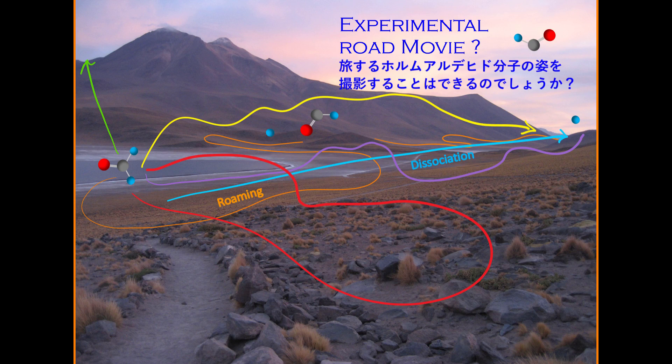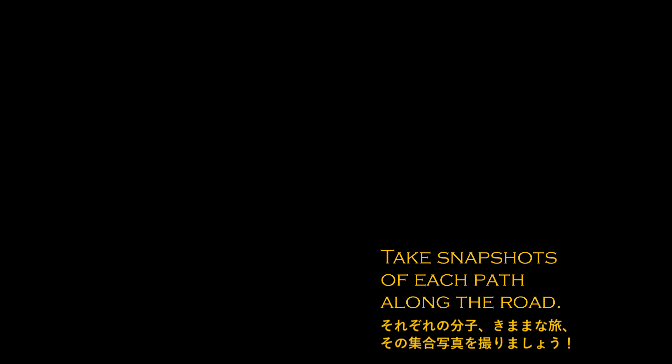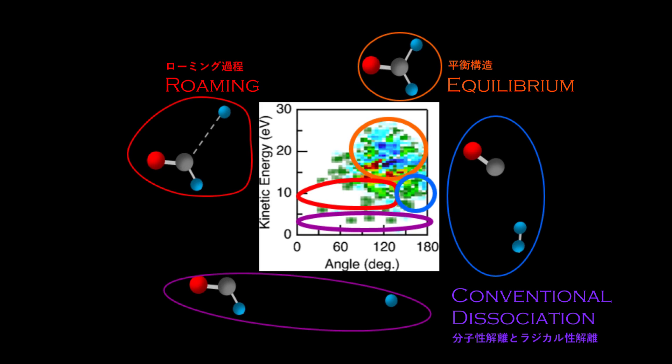How can we make an experimental road movie then? We have to take snapshots of each path along the road. Our experimental observable shows the conventional dissociation at the bottom and right. Roaming is indicated in red.